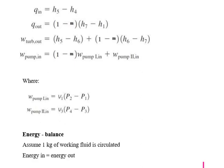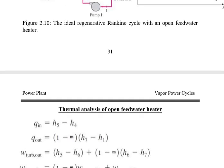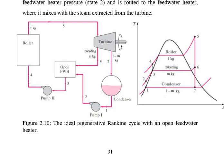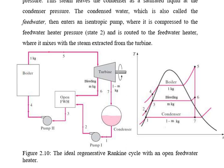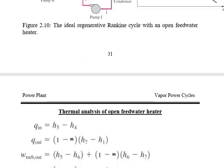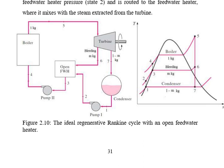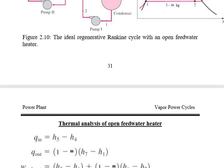Q_out is the heat ejected, considering the mass of steam and enthalpy drop: 1 minus m, multiplied by H7 minus H1. The turbine work output is H5 minus H6, plus 1 minus m, multiplied by H6 minus H7. These two sections — H5 minus H6, and H6 minus H7 — represent the areas from which work output is obtained from the turbine.